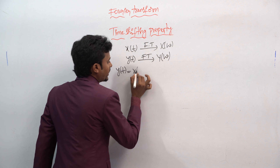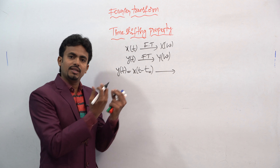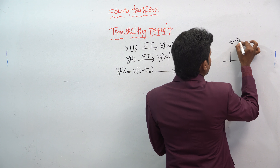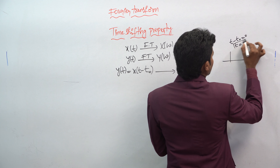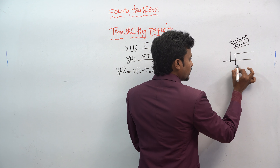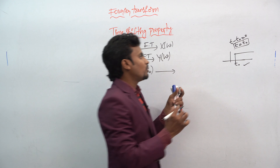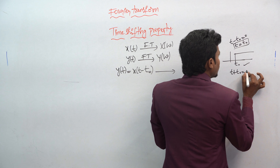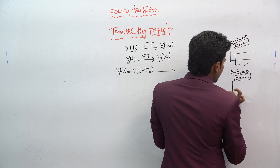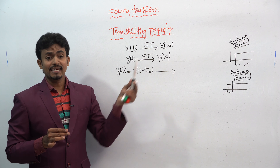For example, if y(t) = x(t - t₀), I have taken a time shift. So t - t₀ = 0 means t = t₀, giving a delayed signal. Similarly, t + t₀ = 0 means t = -t₀, giving an advanced signal. We need to check both advancing and delaying of the signal in the Fourier transform.